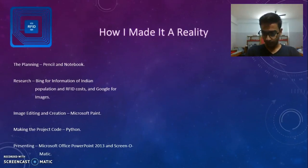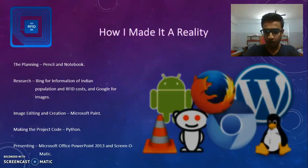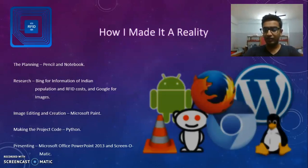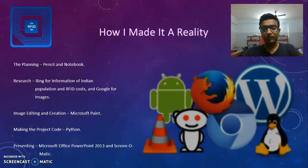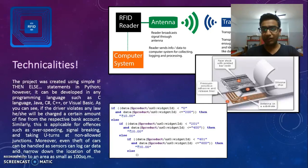Now let's look at how I made it a reality. The planning was done using a pencil and notebook. I did research using Bing for information, as I found it a little more efficient than Google, but used Google for images. The driving license image was edited and created in Microsoft Paint, which I learned through WizJuniors. The project code was made in Python using simple if-then-else statements, and the presentation was done using Microsoft Office PowerPoint and Screen-O-Matic, also taught to me by the WizJuniors online education kit.